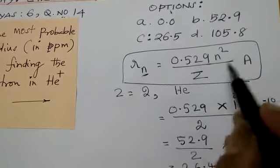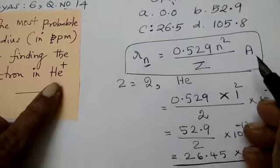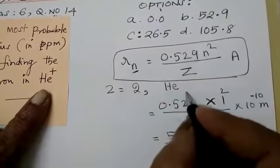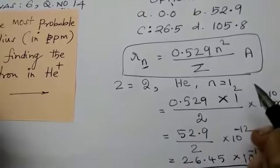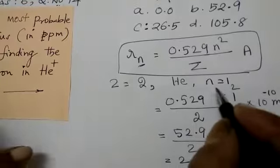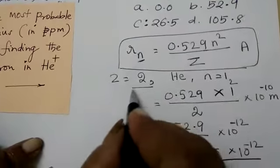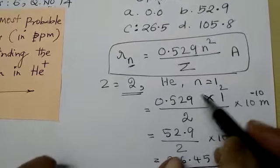What is n? It's the orbit. Z is the atomic number. Here it is the helium plus. So n is equal to 1 because this is having only one electron available in the first shell. So n is equal to 1. And for helium, the atomic number is 2. So z is equal to 2. Now let us substitute.